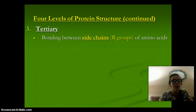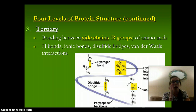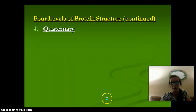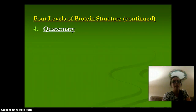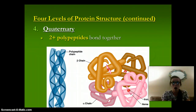Then we have our tertiary level. This is bonding between the side chains or R groups of the amino acid. Hydrogen bonds, ionic bonds, disulfide bridges, and van der Waals forces cause these side chains to bond together. Then we have our quaternary level — the fourth level. This is two or more polypeptides bonded together, basically a ball of different polypeptides together.